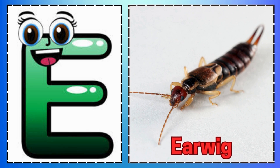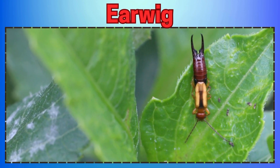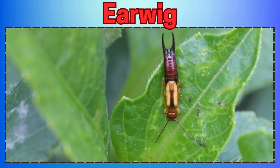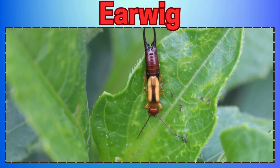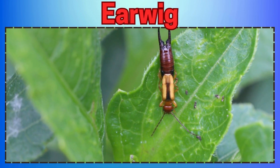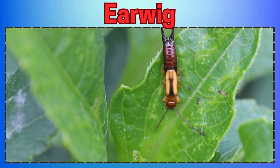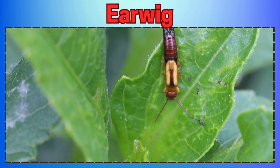Y is for Yellow Jacket, Watch out for its Sting. Z is for Zebra Swallowtail Spreading its Wings.